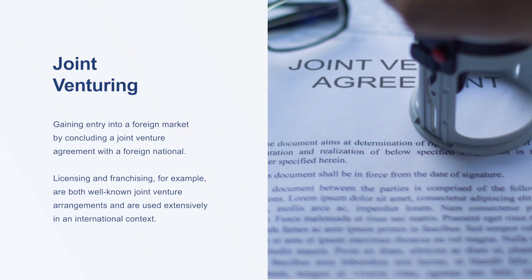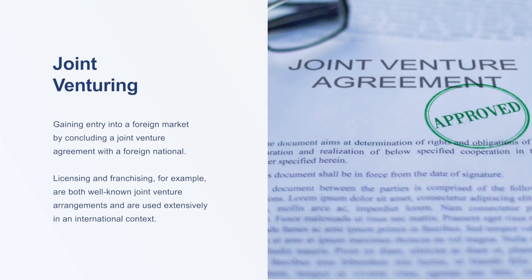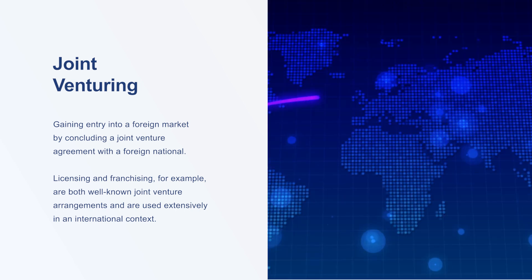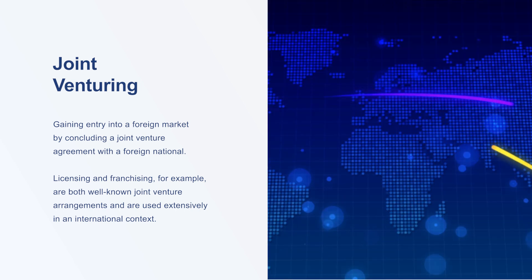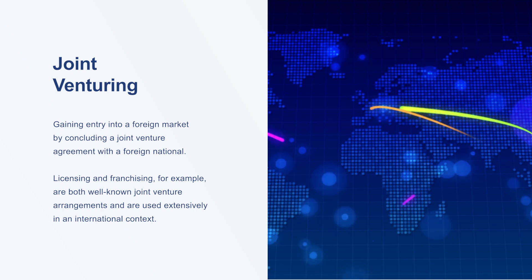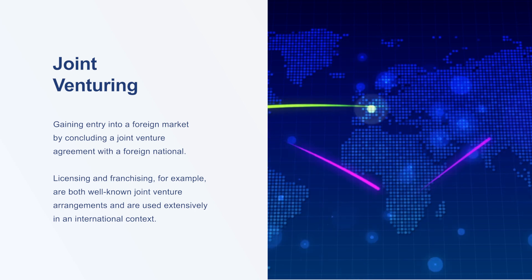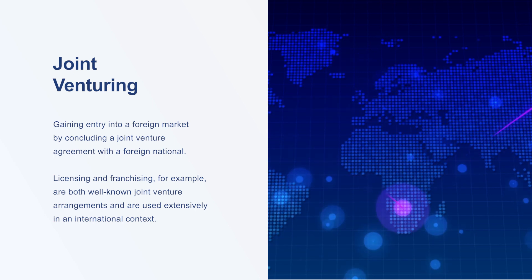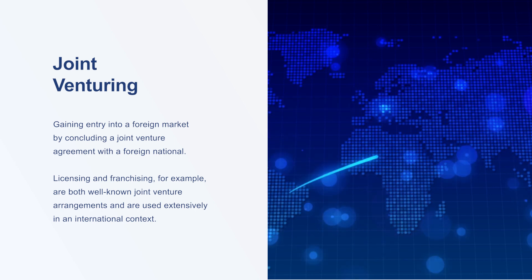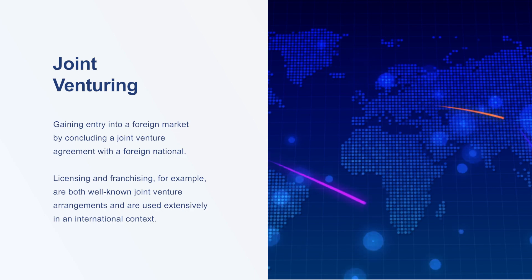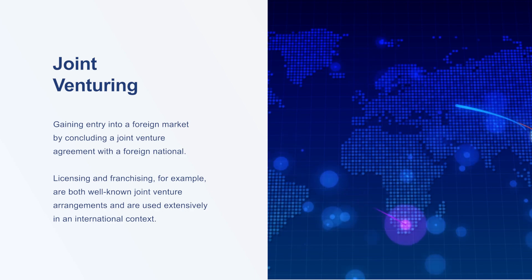Another option for gaining entry into a foreign market is to conclude a joint venture agreement with a foreign national. This is known as joint venturing. Licensing and franchising, for example, are both well-known joint venture arrangements and are used extensively in an international context.